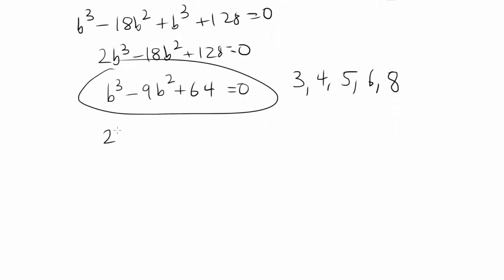So plugging 3 into it, you get 27 minus 81 plus 64, also known as, they get to 91. So that's positive 10. Let's plug 4 into it. 64 minus 9 times 16 plus 64 is equal to, you have 128 minus 144. That's negative 16.